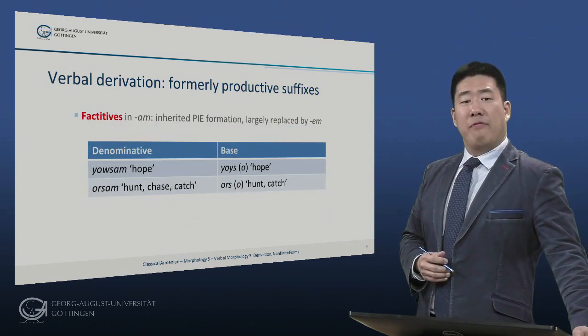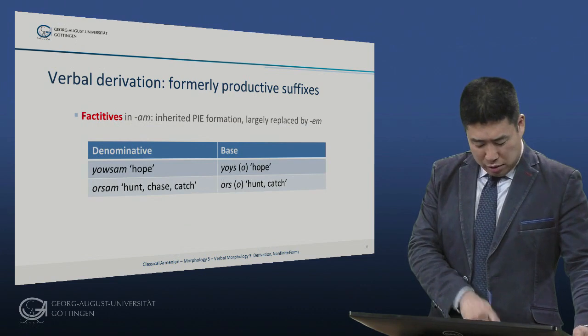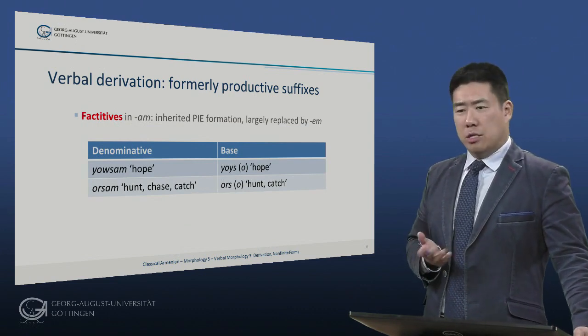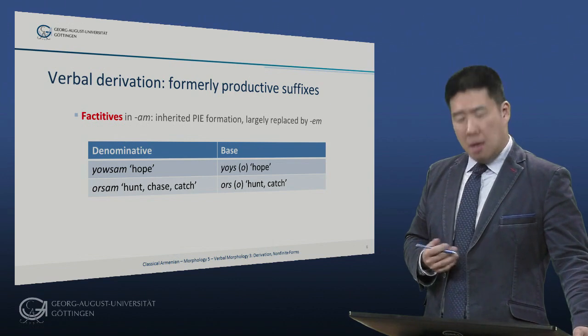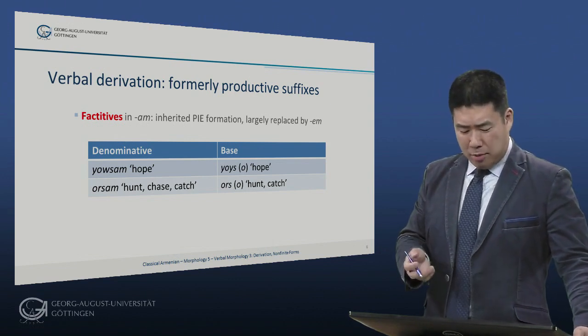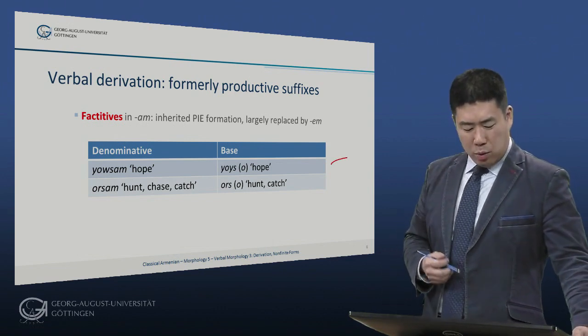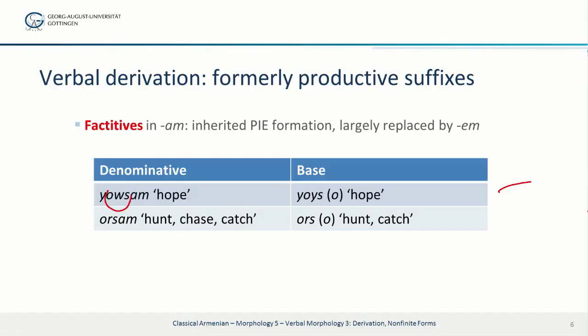We also have some factatives in -am. This is an inherited Proto-Indo-European formation, found in other older Indo-European languages such as Hittite or Latin, but has largely been replaced in classical Armenian by -em, so there are not too many examples. To yois 'hope' we have usam — note the entirely regular vowel weakening — meaning 'I hope.' To ors 'hunt or catch,' we have denominative orsam 'I hunt, chase, catch.'